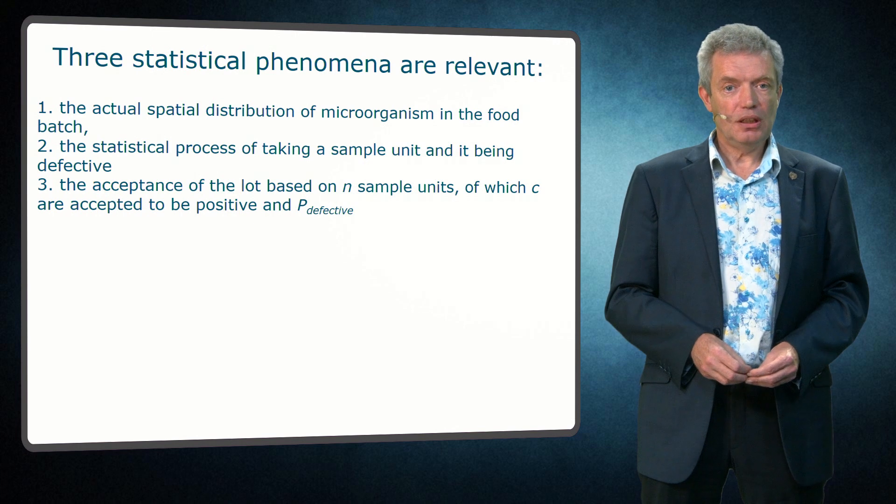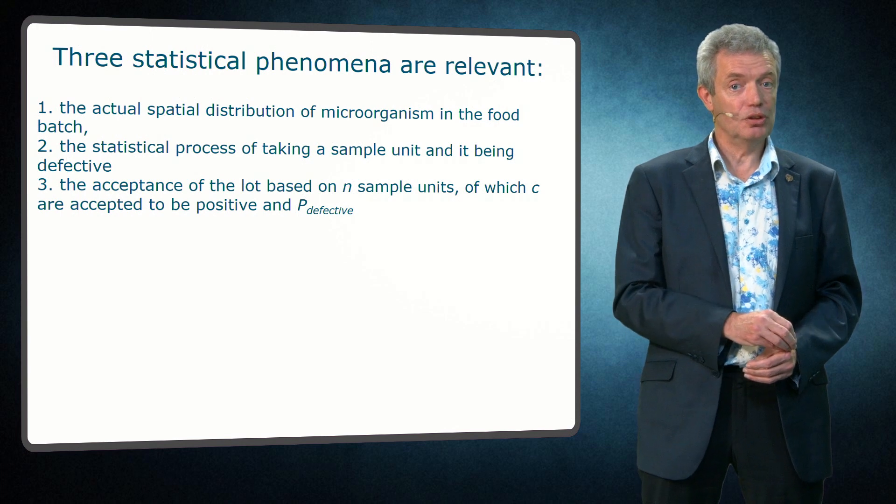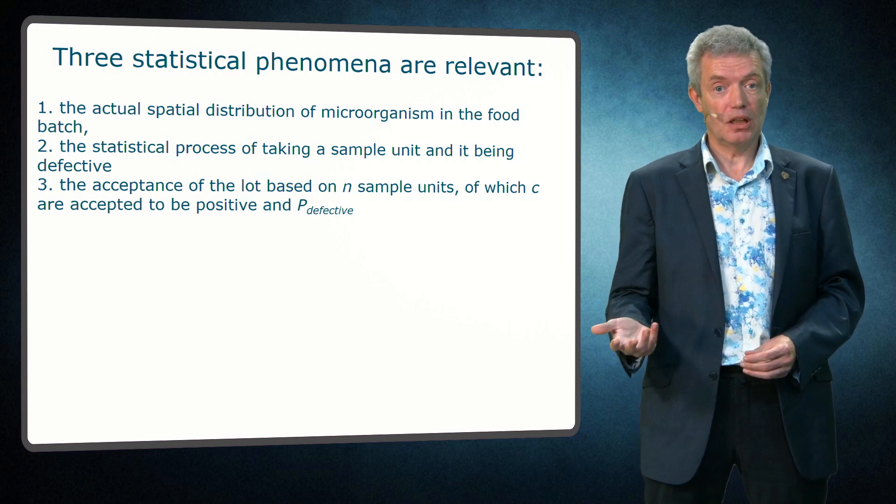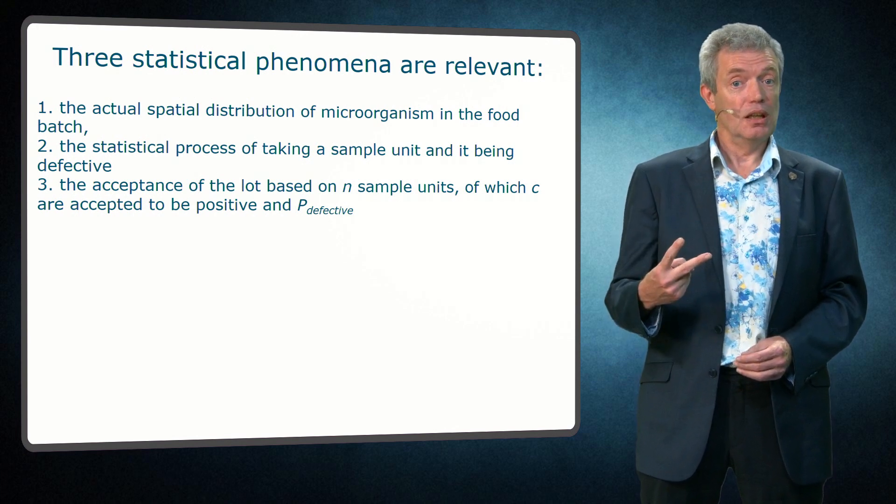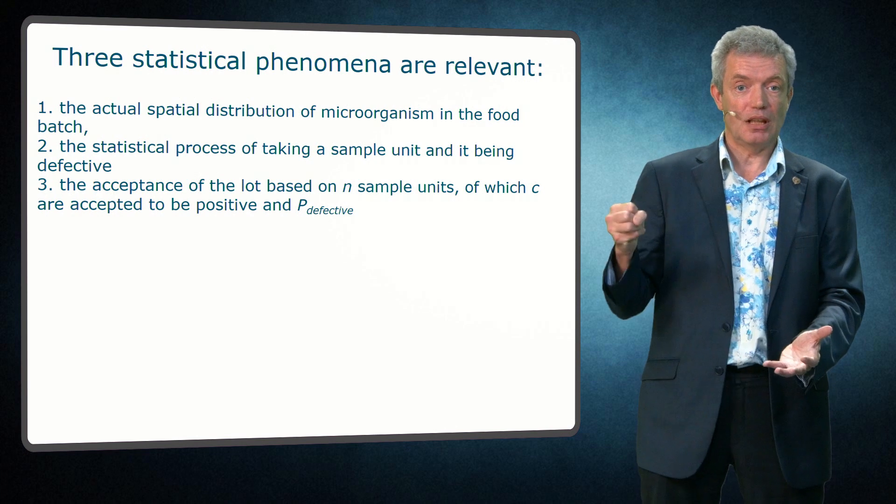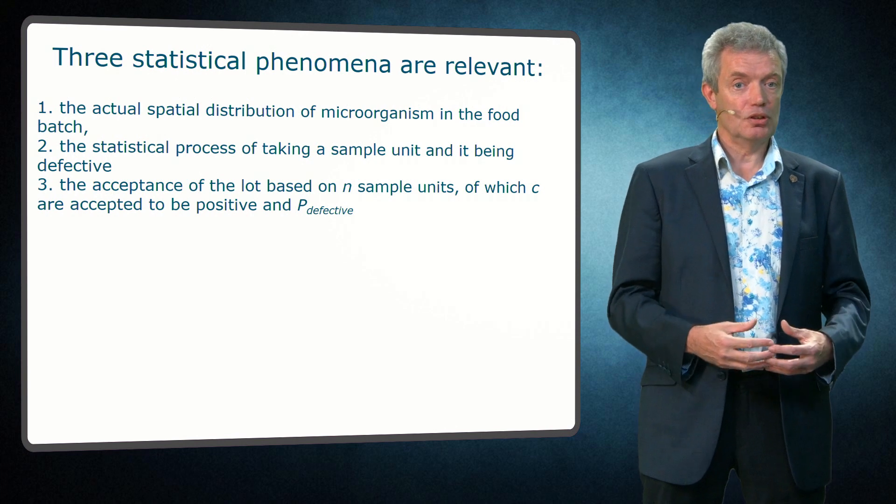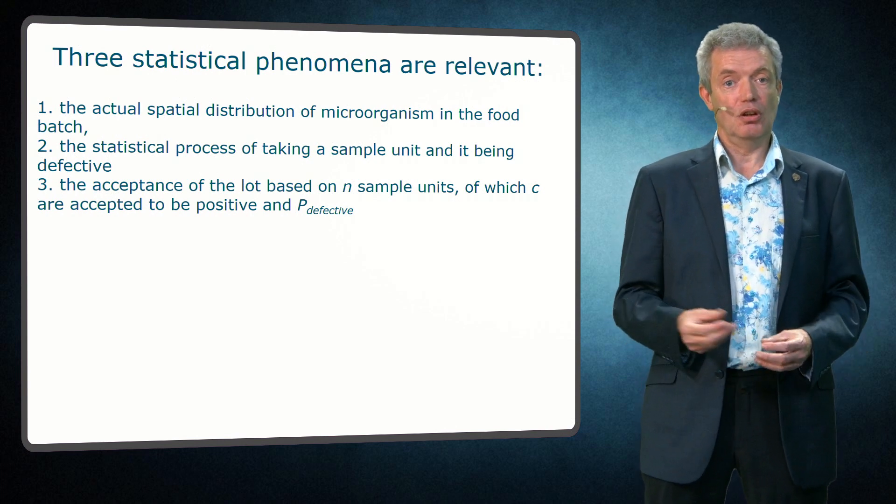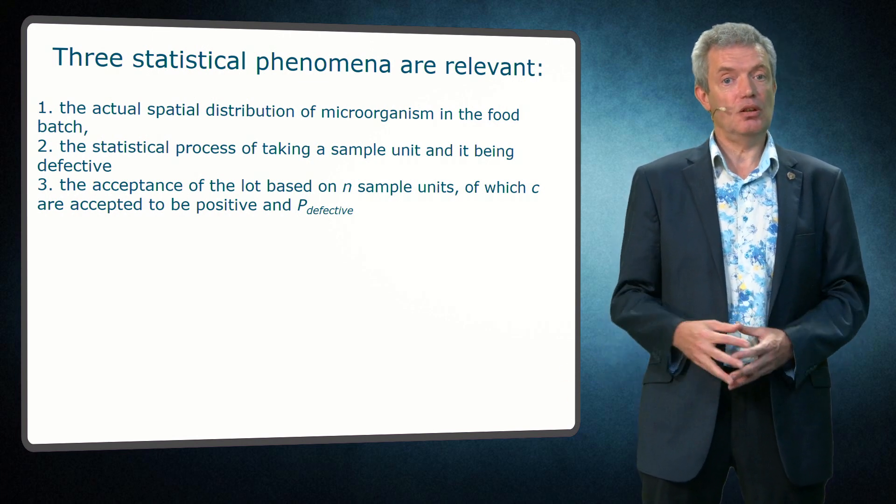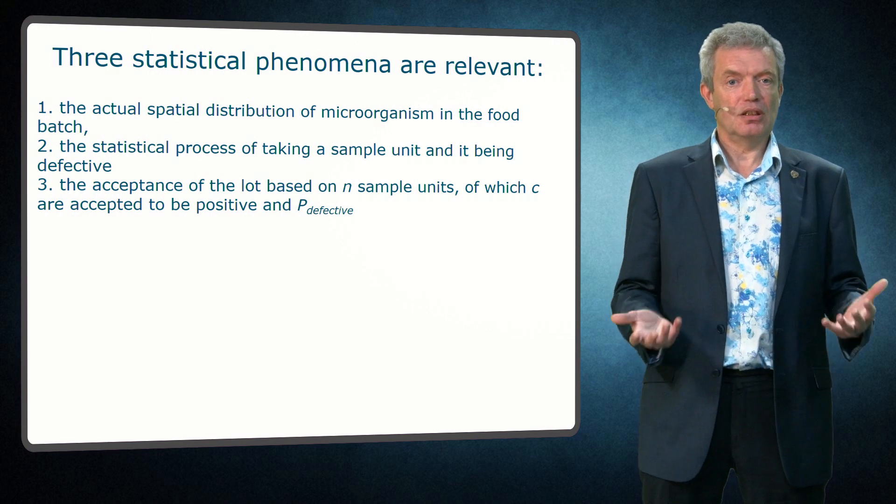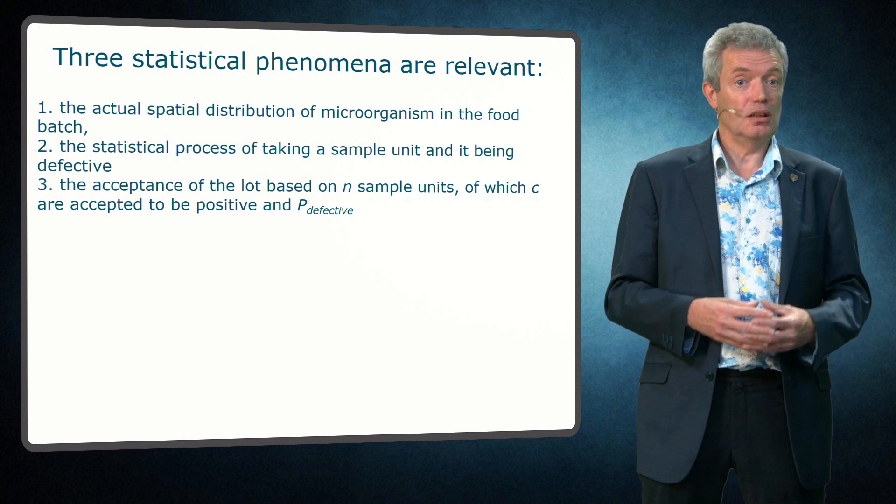So I have explained three relevant stochastic phenomena. First the actual spatial distribution of the organism in the batch of food, governed by microbial processes or by processing, and that results in a specific statistical distribution. The second is the stochastic process of taking one sample and whether or not that sample is defective. And the third part is then the acceptance of a lot based on taking n samples of which C may be positive, and each sample having a p defective, what can be calculated with the binomial equation. This makes the statistics a little bit complex. But in reality these three phenomena exist and need to be taken into account.